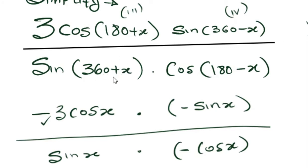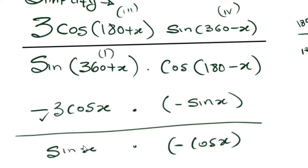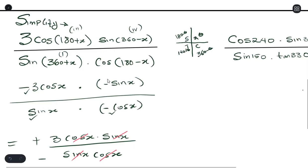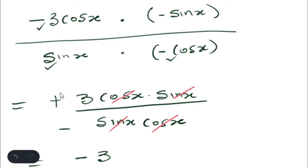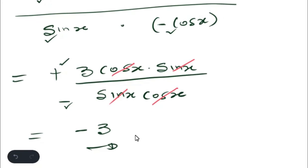360 plus x is in the first quadrant, so sine is positive there. And 180 minus x is in the second quadrant, where cos is negative. So after applying the signs, the numerator gives us negative cos x times negative sine x, which is positive. The denominator gives a positive sine x times a negative cos x. After multiplying, the numerator is 3 cos x sine x and the denominator introduces a negative. The cos cancels with cos and sine cancels with sine, leaving a final answer of negative 3.